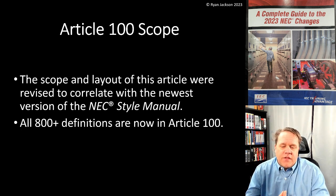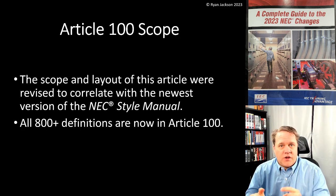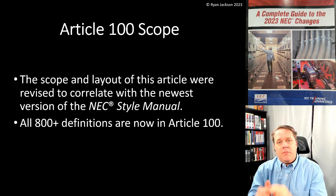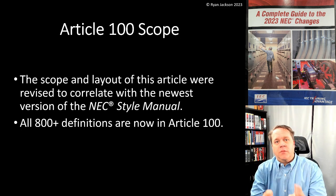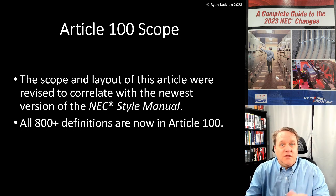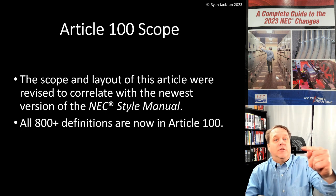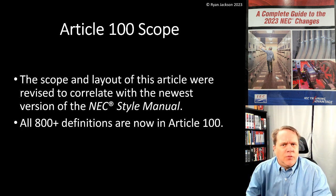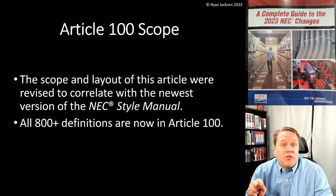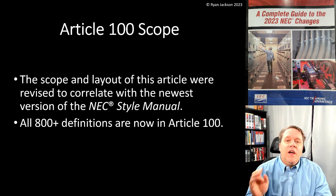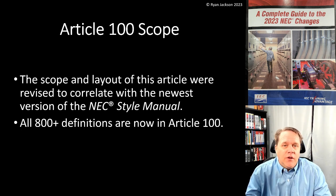The Style Manual covers things like: when writing a code rule, you must use words like 'shall' or 'shall not' or 'be required'; metric measurements come first, imperial second; and any mandatory exception must appear before any permissive exception. The Style Manual also dictates how the code is laid out — Chapter 1, Chapter 2, Chapter 3, and so on.